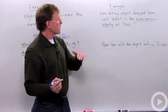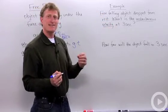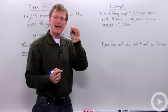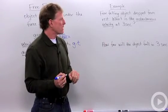Free falling object dropped from rest, so we're not accelerating it down, we're just dropping it from rest. What is the instantaneous velocity, the velocity exactly at 3.0 seconds after it's been dropped?